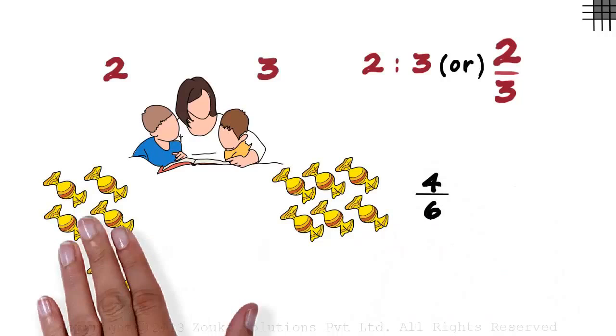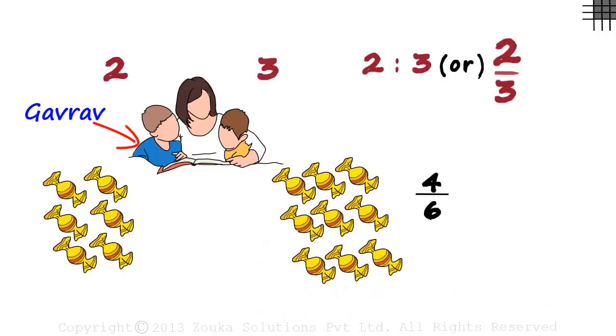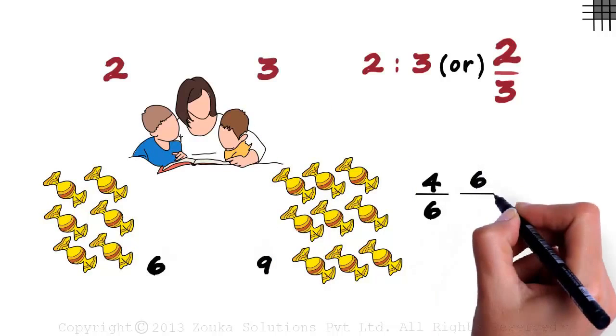The magic hand again gives Gaurav two chocolates and Jai three chocolates. Now the total number of chocolates with Gaurav is 6 and the total number of chocolates with Jai is 9. So the ratio becomes 6 by 9.